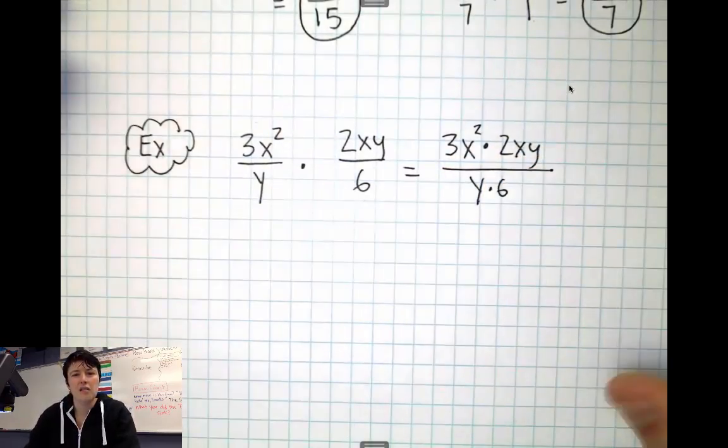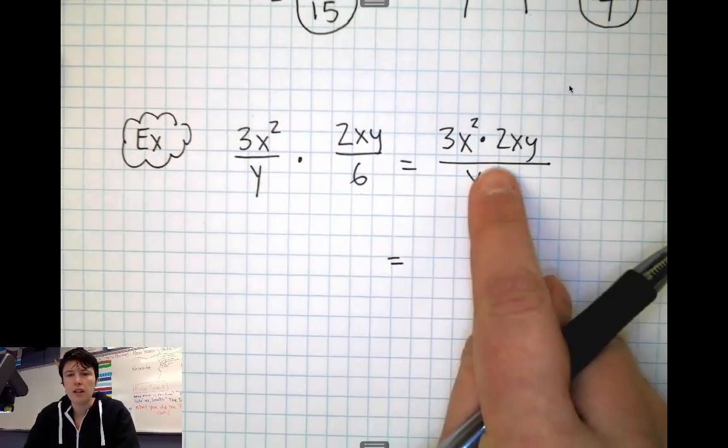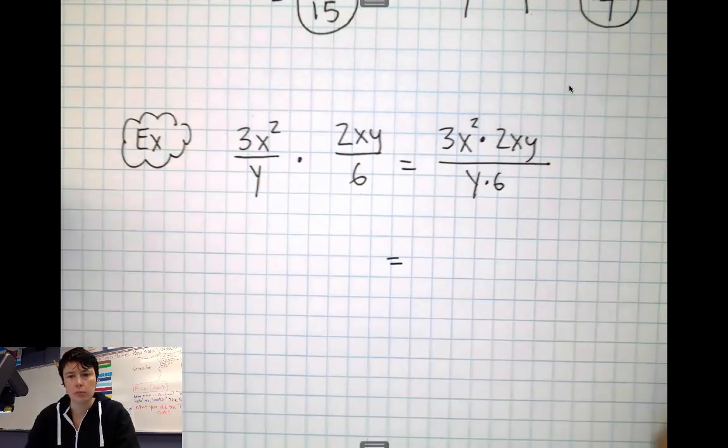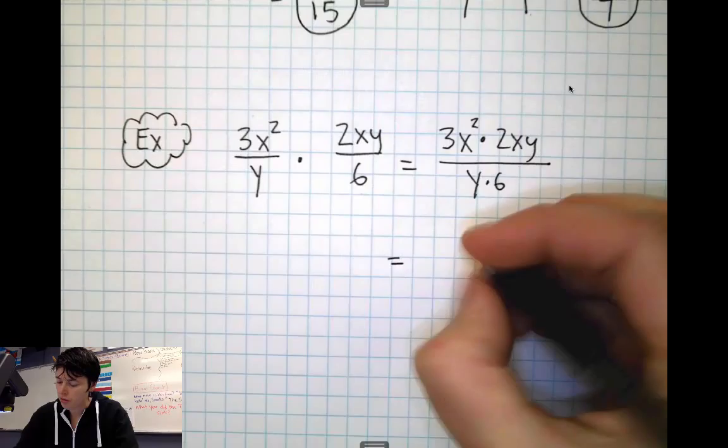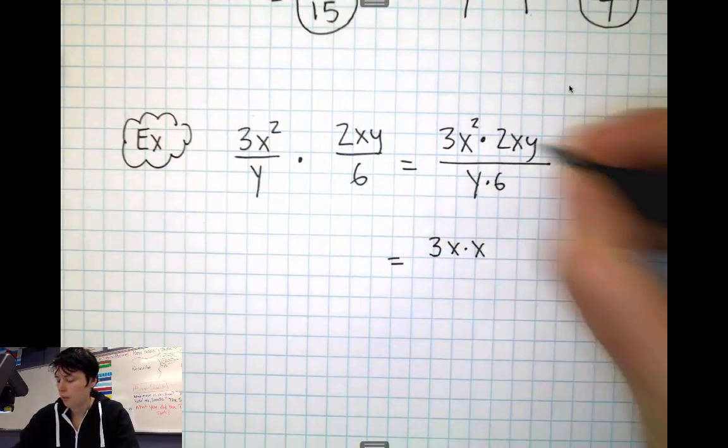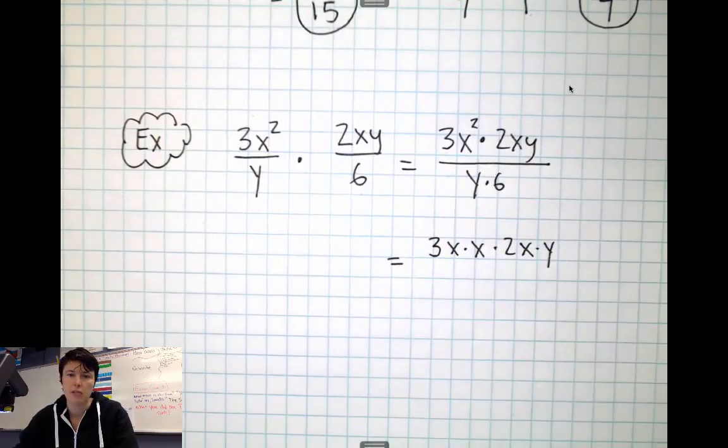I'm going to do 3x² times the 2xy, and on bottom I'm going to do y times 6. Then I need to clean it up, if I can simplify, I should. There's no adding, there's no subtracting, we can just break it down into its little parts. So 3x² is 3x times x.